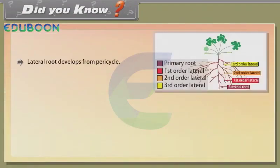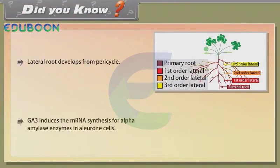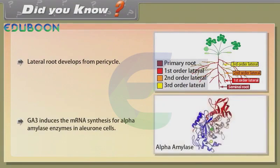Did you know: Lateral roots develop from the pericycle. GA3 induces the mRNA synthesis for alpha-amylase enzymes in aleurone cells.